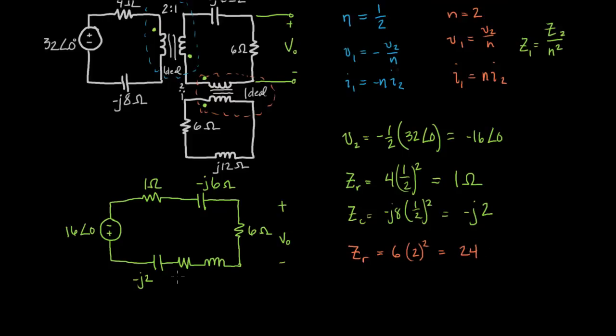So this is 24 ohms. And then the inductor is finally, if you just plug that in, you'll find that the inductor is J12 times 2 squared. So that's 48.